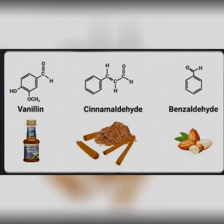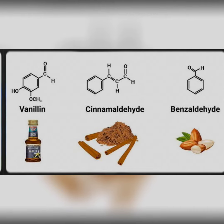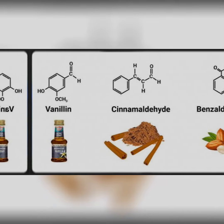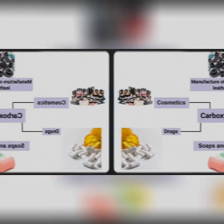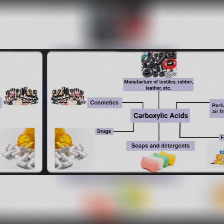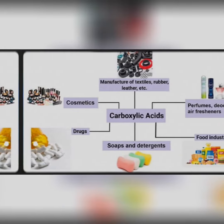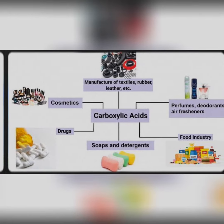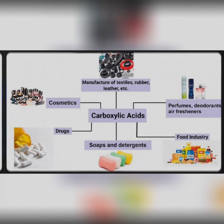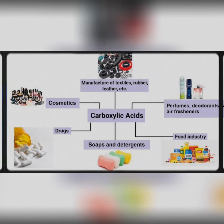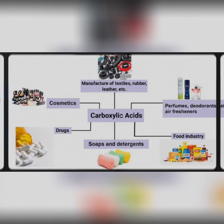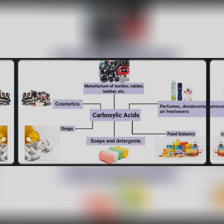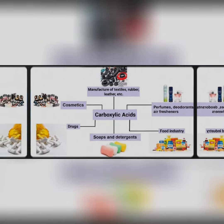They can also be reproduced synthetically in a laboratory. These fragrant amalgams contain what is known as a formal group, which is part of a molecule with a specific structure as shown in organic chemistry. An aldehyde is an organic compound containing a terminal carbonyl group.